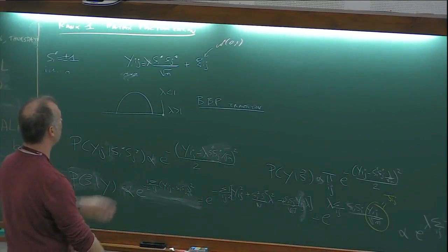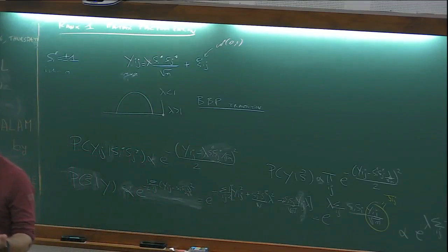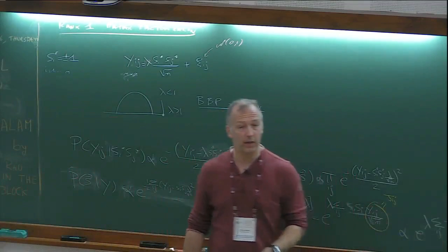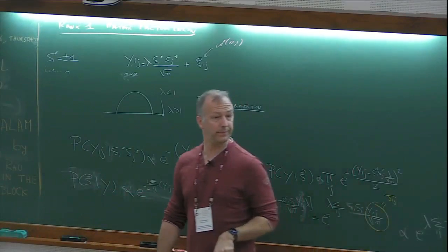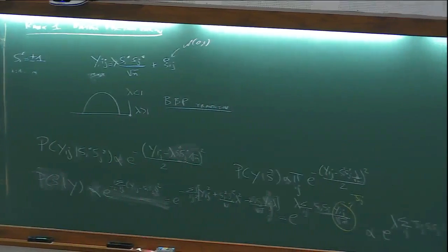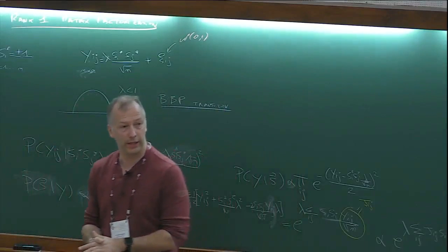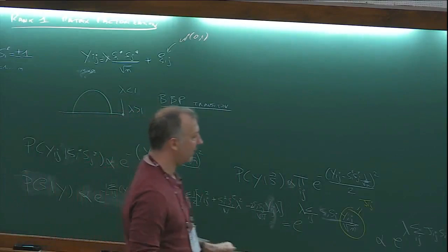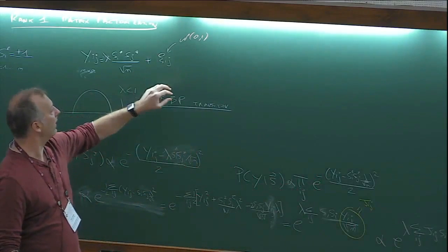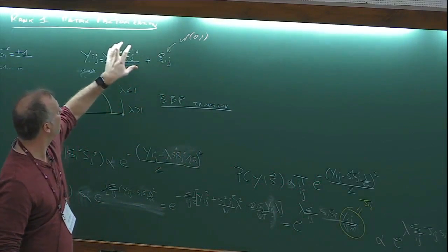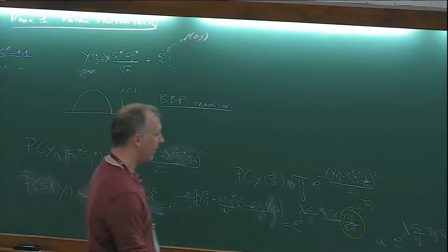The difference from yesterday: yesterday the sum was over pairs on a random graph. Today I'm summing over all possible pairs — it's a fully connected model. In the spin glass literature, this kind of problem is called the Sherrington-Kirkpatrick model. It would be exactly SK if the J's were truly random and uncorrelated Gaussians, but here they have a rank-one perturbation, so there is some structure.